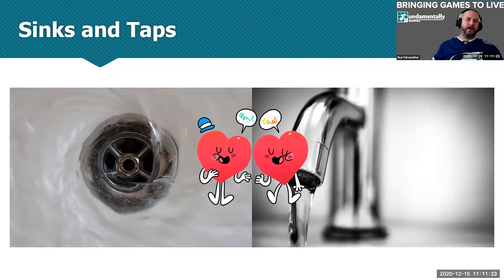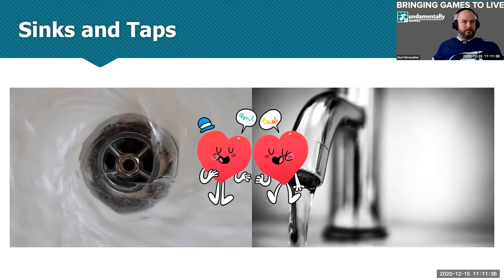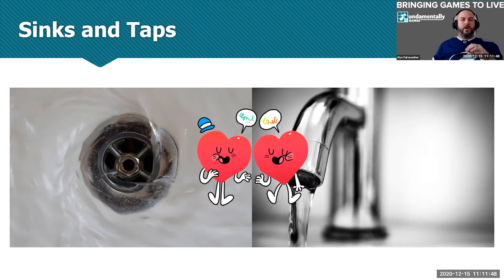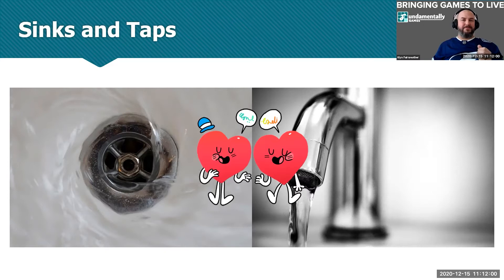Sinks and taps — if there was ever a 101 for game economy, it's this. Think of a bath: the tap adds water, the plughole removes it. You're in a bath with no plug, full control over the taps. Your objective as the economy designer is to maintain a water level high enough to bathe but not so high the bath overflows. You also have to think about temperature.